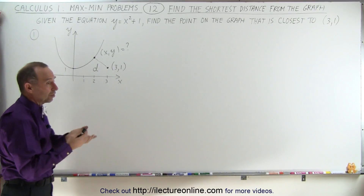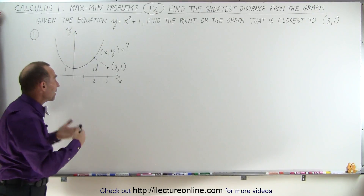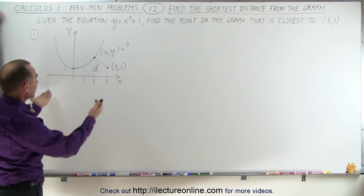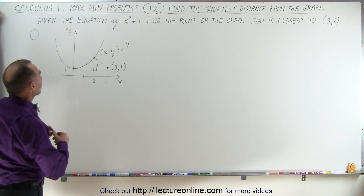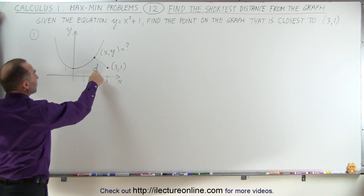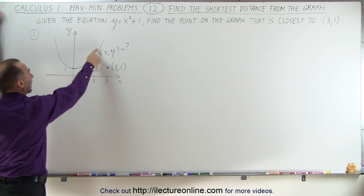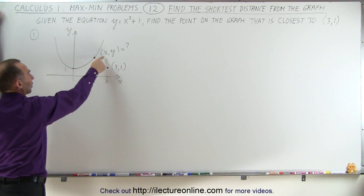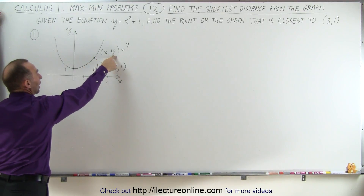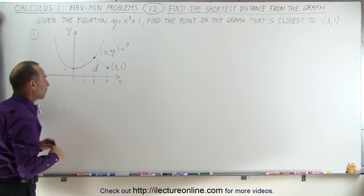The second question then is: what is being maximized or minimized in this case? The answer is we're trying to minimize the distance between a given point on the graph — let's call it (x, y) — and the given point (3, 1).